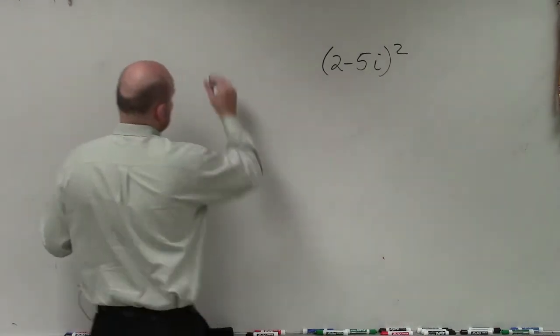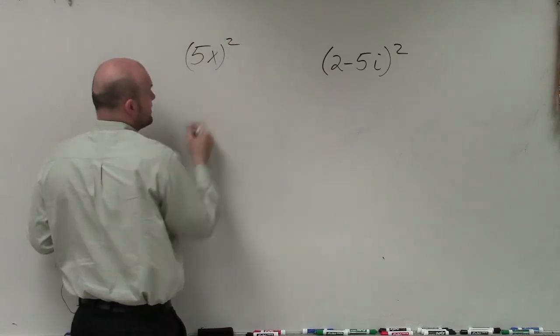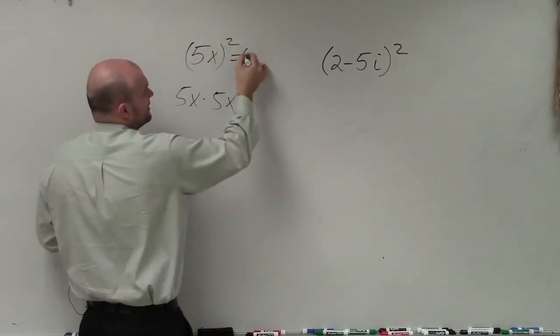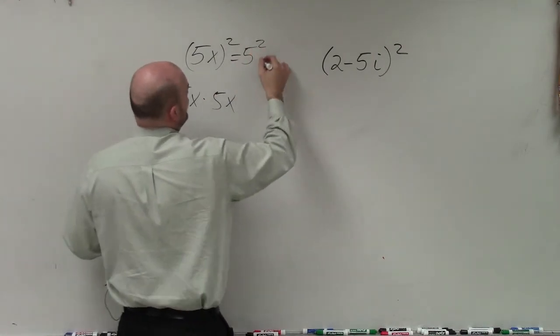But it's a very common mistake because, for instance, if I say 5x squared, students are familiar that that is 5x times 5x. But basically, another way we can write that is 5 squared times x squared.